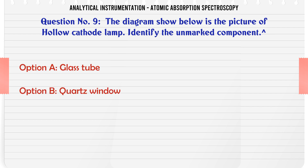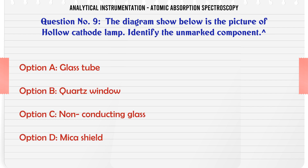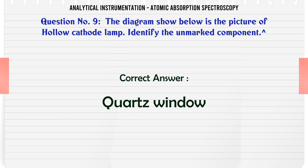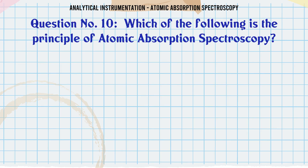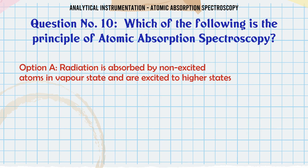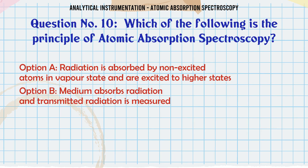The diagram shown below is a picture of a hollow cathode lamp. Identify the unmarked component. A. Glass tube. B. Quartz window. C. Non-conducting glass. D. Mica shield. The correct answer is quartz window.